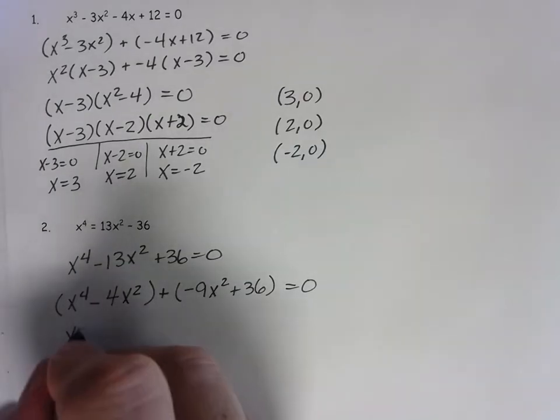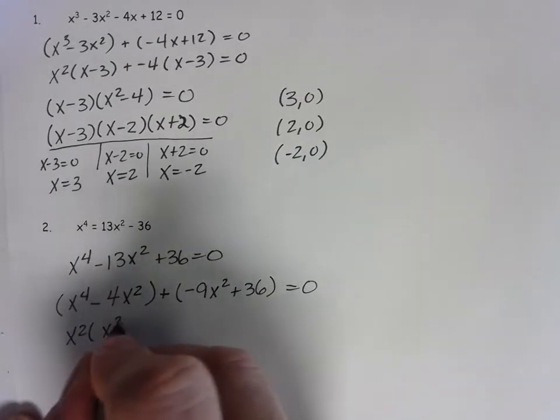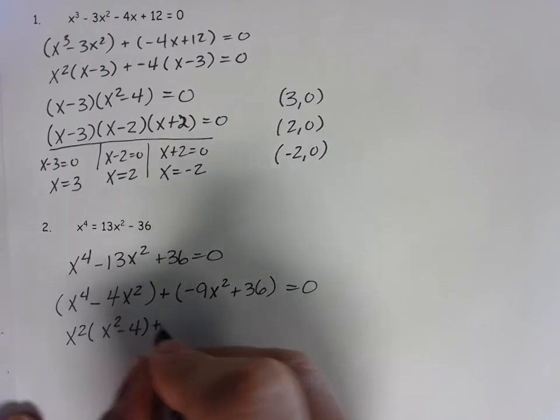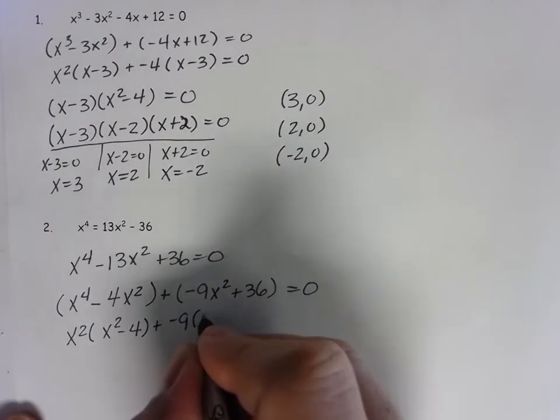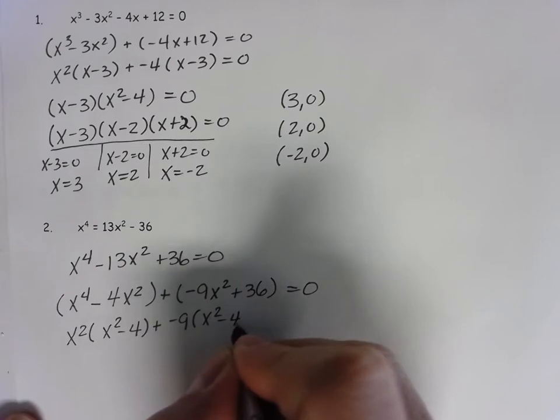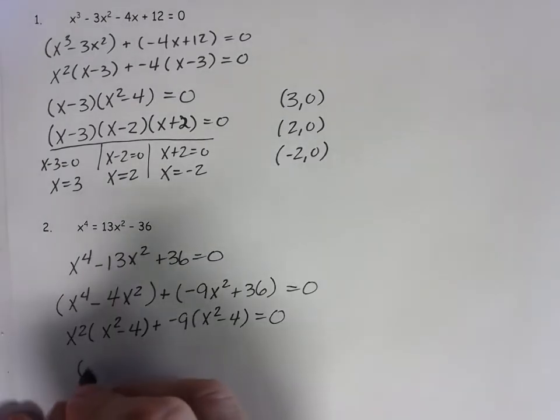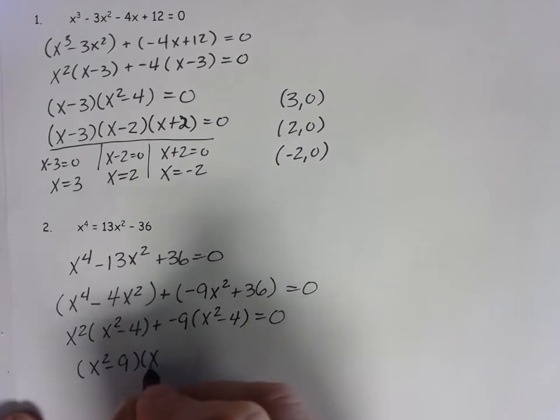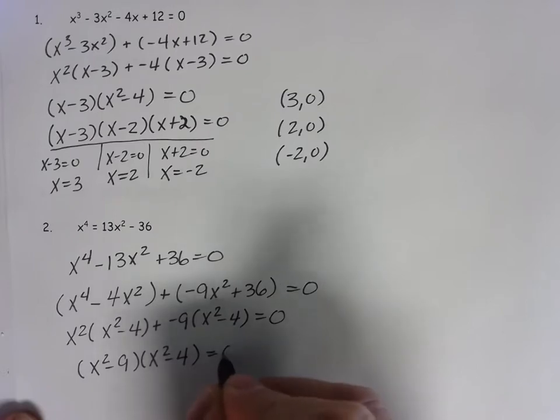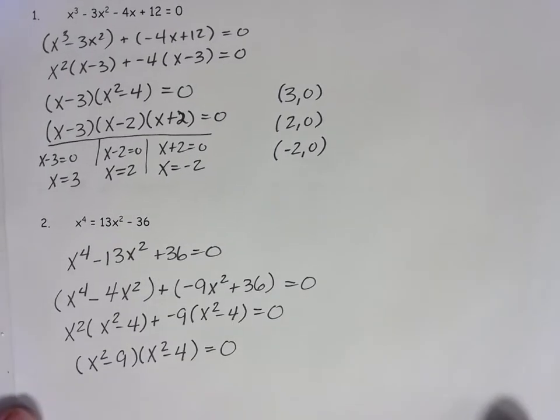So I have x squared out of the 1st, x squared minus 4 remain. The negative 9 coming out of the 2nd, x squared minus 4 remaining. So I now have x squared minus 9, x squared minus 4. Both of those plug together to give me 0.